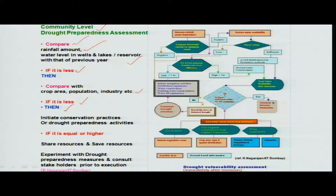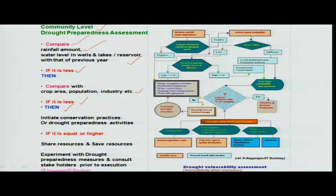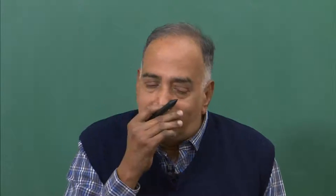Compare rainfall in your area with the rest of the region; if it is negative, start your own conservation activities. If rainfall is okay but water levels or storage levels are different, that is the supply side. Demand stays roughly the same each year, so compare with previous years — if you managed through drought before, you can again; otherwise, start tightening your belt and expect perhaps a 20% shortage of water.